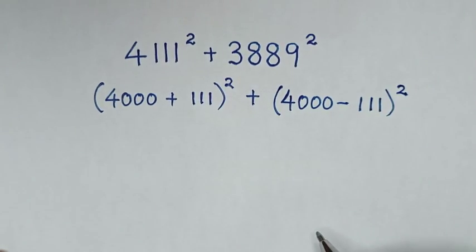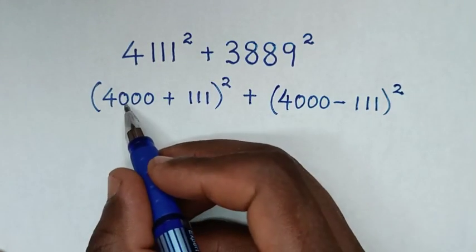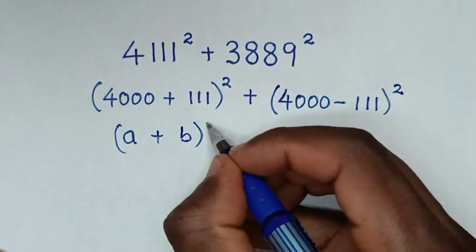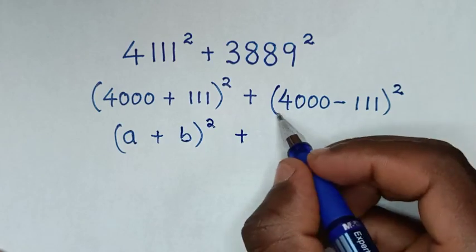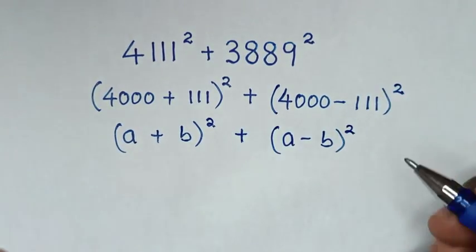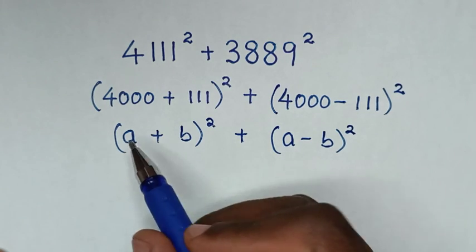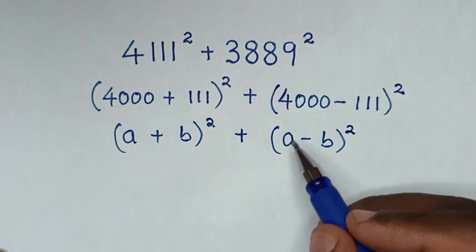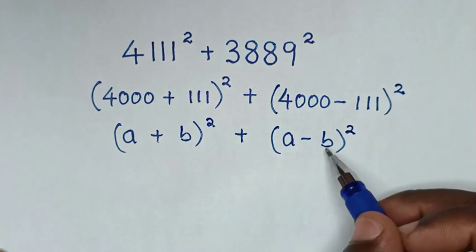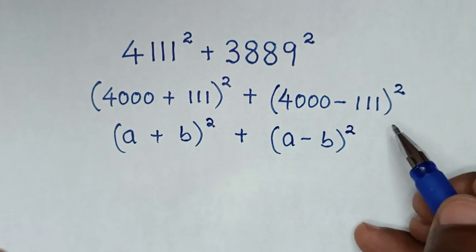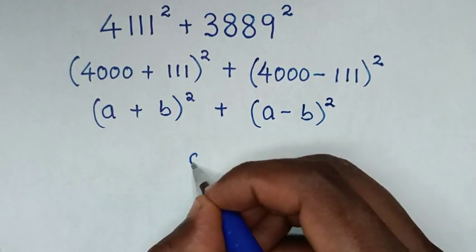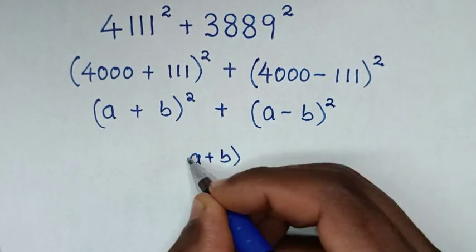In the next step, the first term is in the form of (a+b)², and the second term is in the form of (a−b)², where a is 4000 and b is 111.